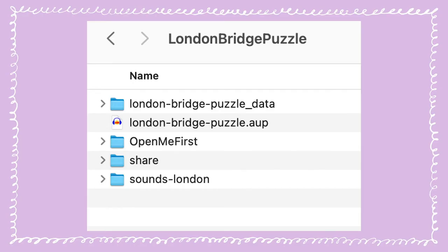When you open the zip file, this is what you're going to see. You'll have the Audacity file with the data file. Then 'OpenMe first,' which is instructions, although there are videos as you're watching now. Then the share folder, where you can put all of your creations. And then there are the sounds. Let's dive deeper into the sounds folder.